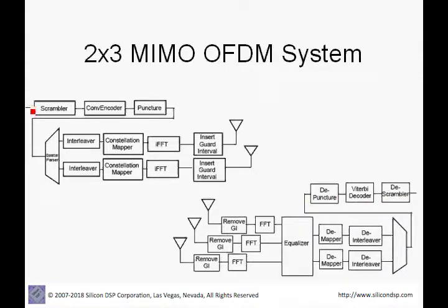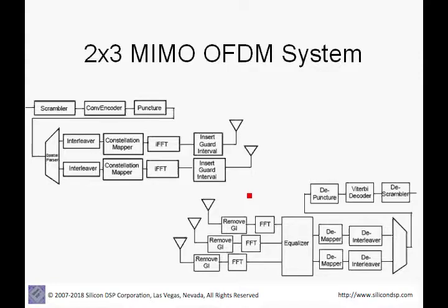For example, we might have a data stream of 2 times 54 Mbps, or 108 Mbps, and at the receiver we actually receive 108 Mbps while spatially multiplexing two streams over the air. This is a basic overview of a 2x3 MIMO system, and the following will show how we can model this in CAPSIM and compare the performance of a 2x3, 2x2, SISO, and MRC case.